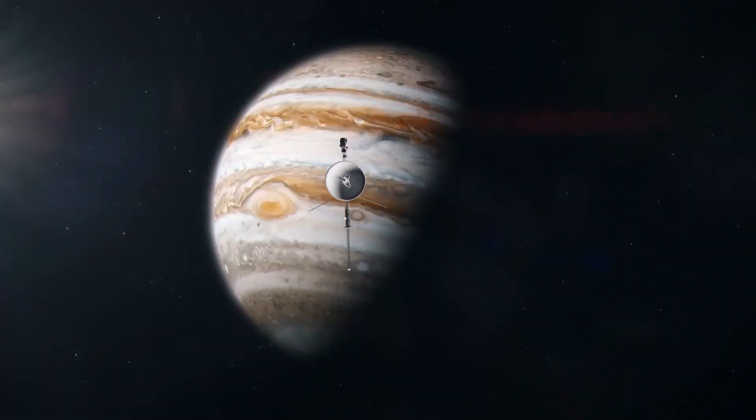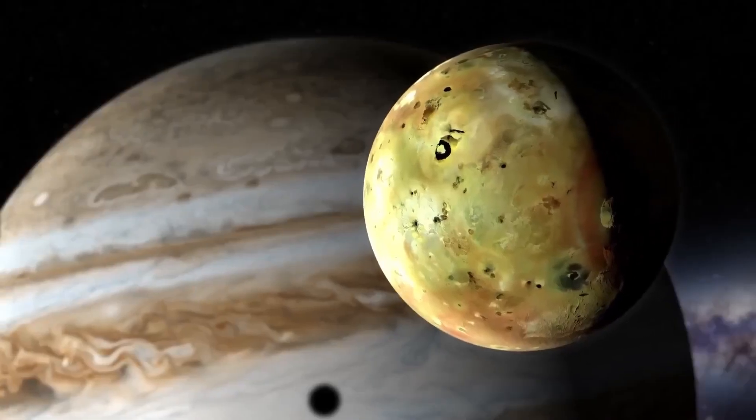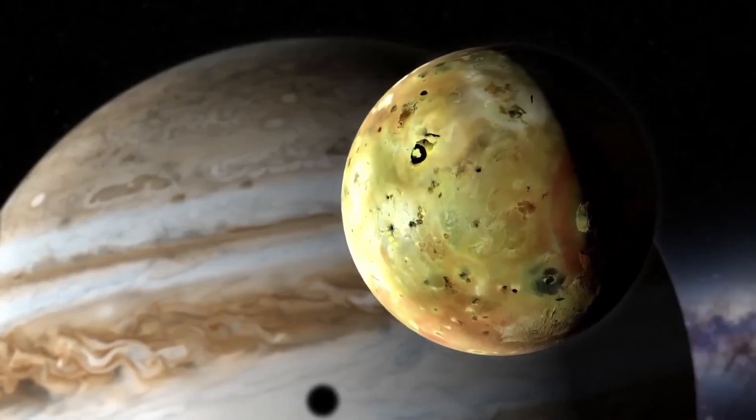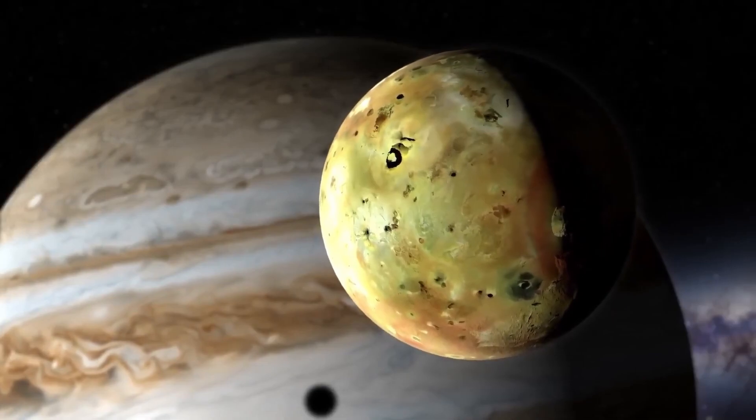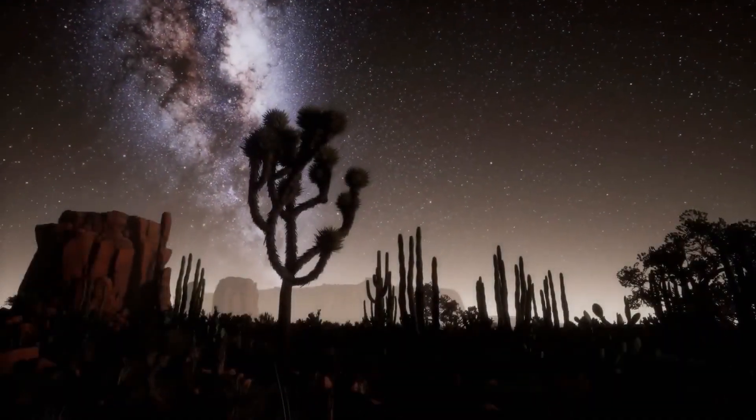NASA launched two nearly identical spacecraft, Voyager 1 and Voyager 2, just 15 days apart in the summer of 1977, to take full advantage of this cosmic shortcut.